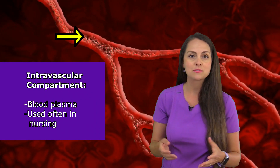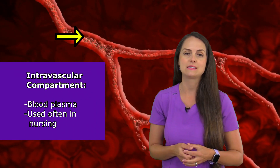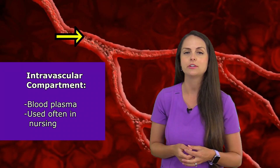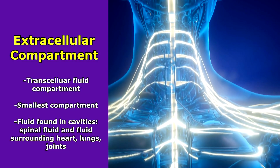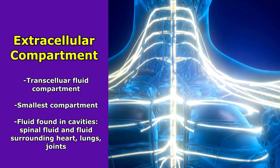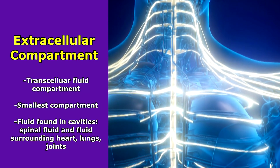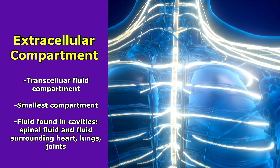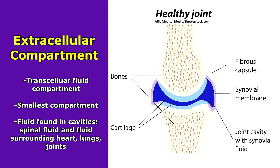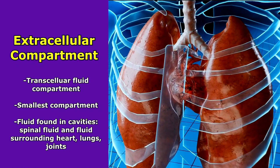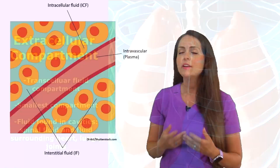Many times the reason we're accessing the intravascular compartment is because we need to give patients fluids. Then there's another part of the extracellular compartment known as the transcellular, which is the smallest part. It's the fluid found around certain joints and certain organs in our body, like the heart and the lungs.